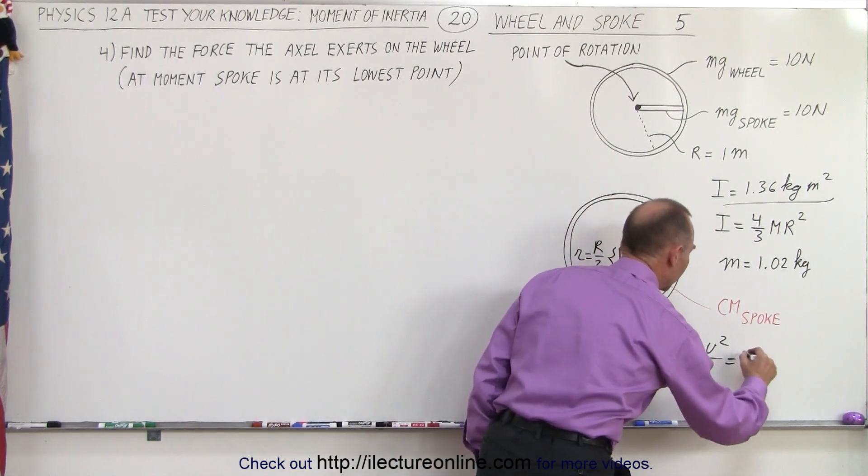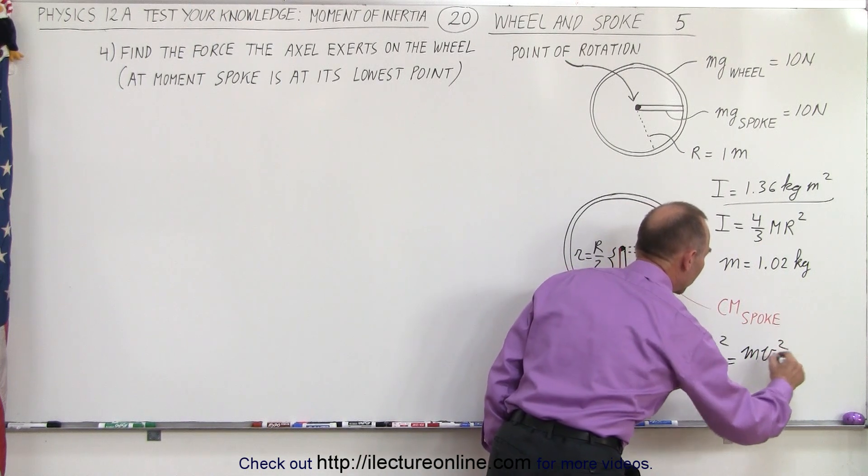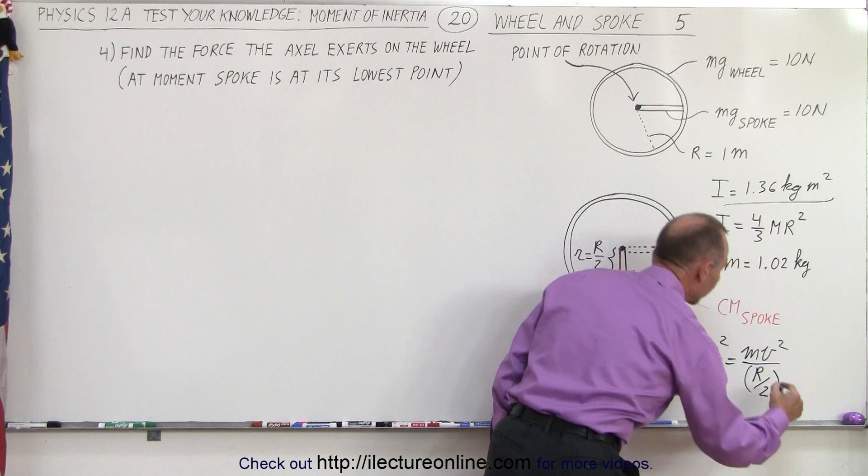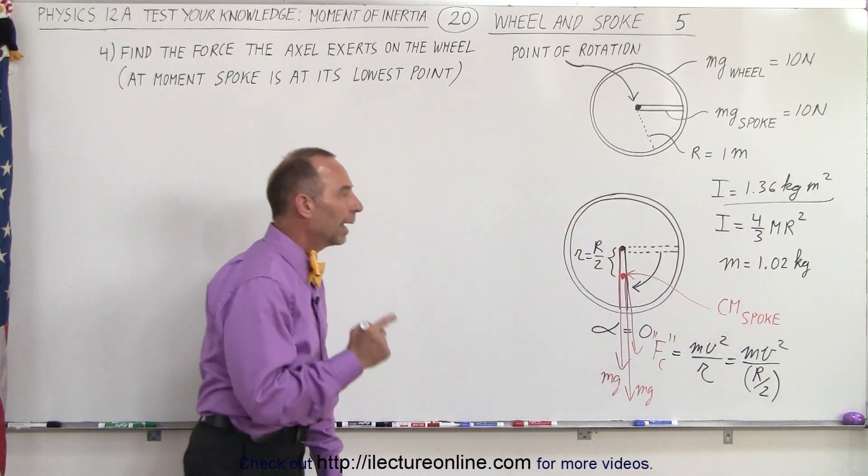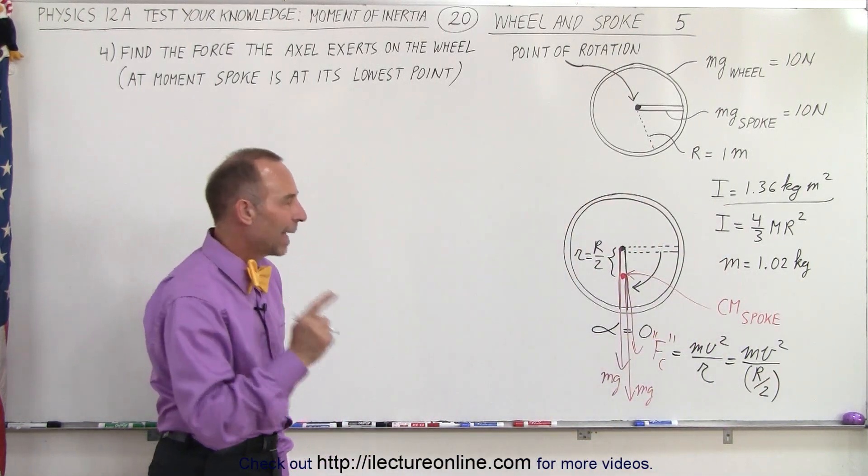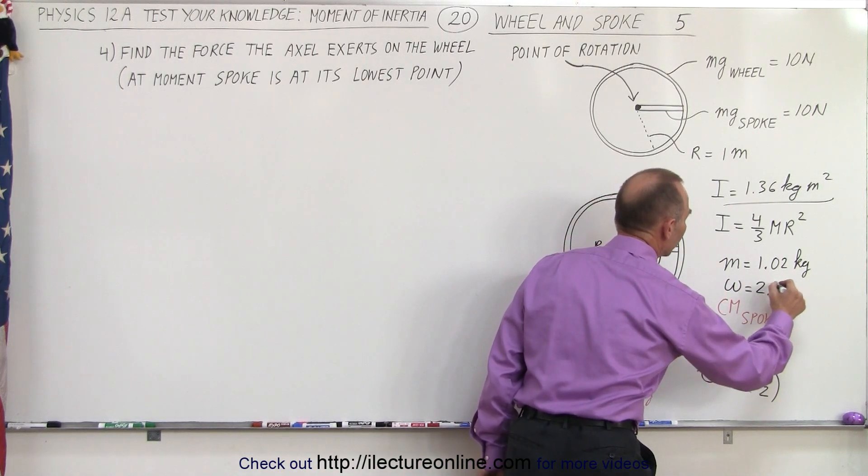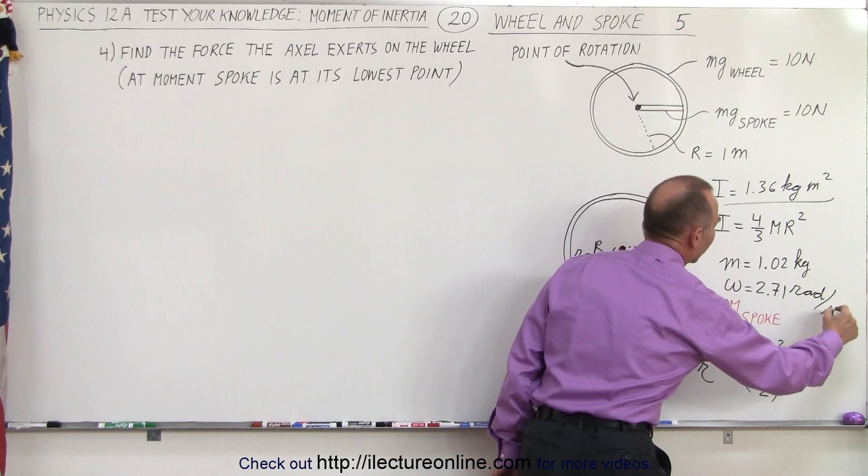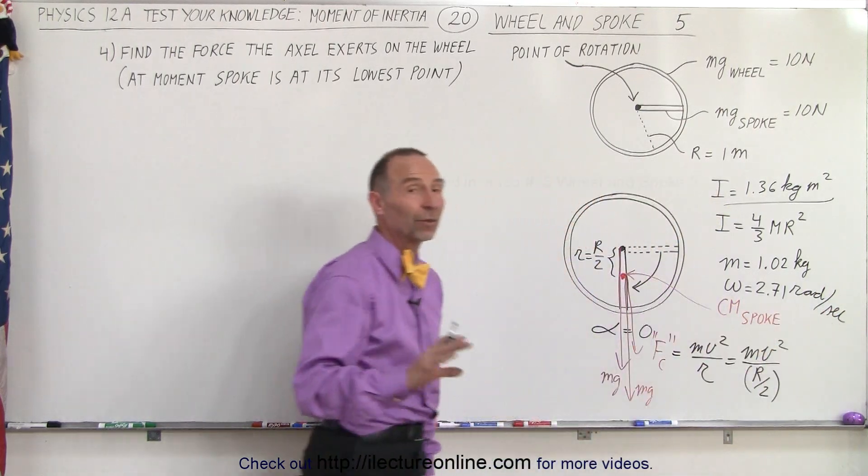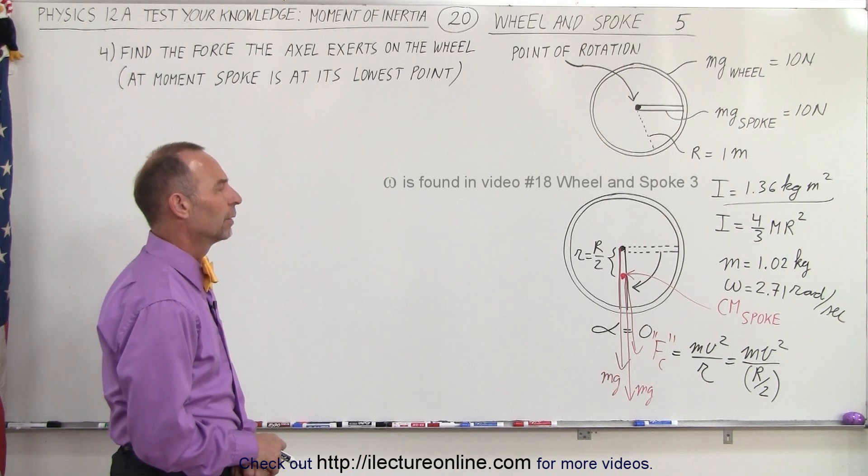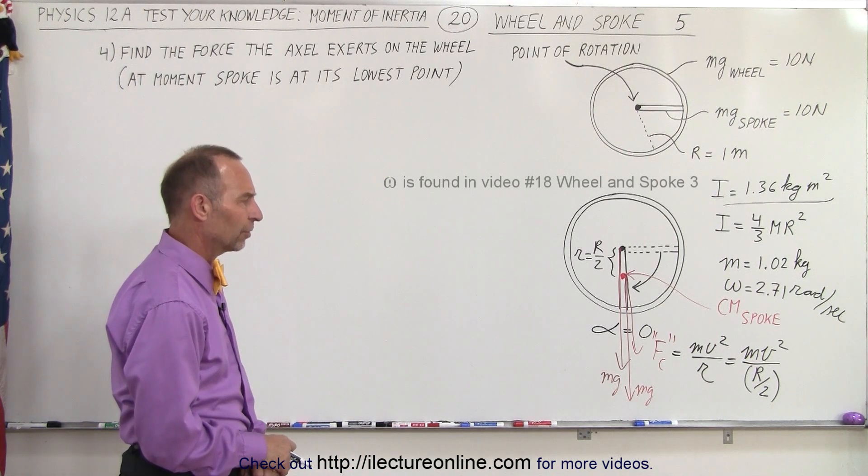So we can say that this is equal to mv squared over r divided by 2, and we also have to remember that the angular velocity at that moment from a previous video was equal to 2.71 radians per second. That's something we calculated earlier. So what do we do next?